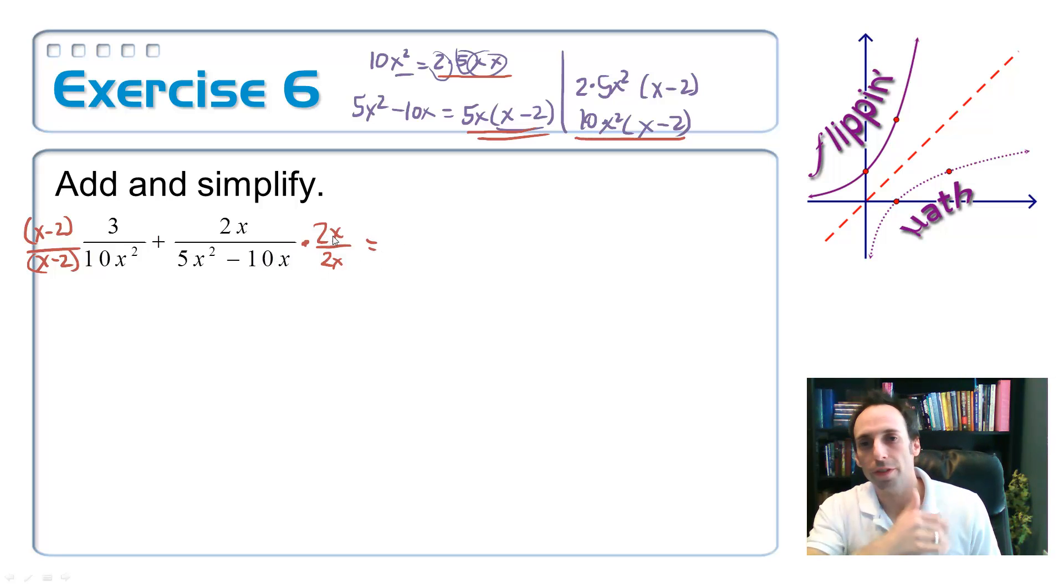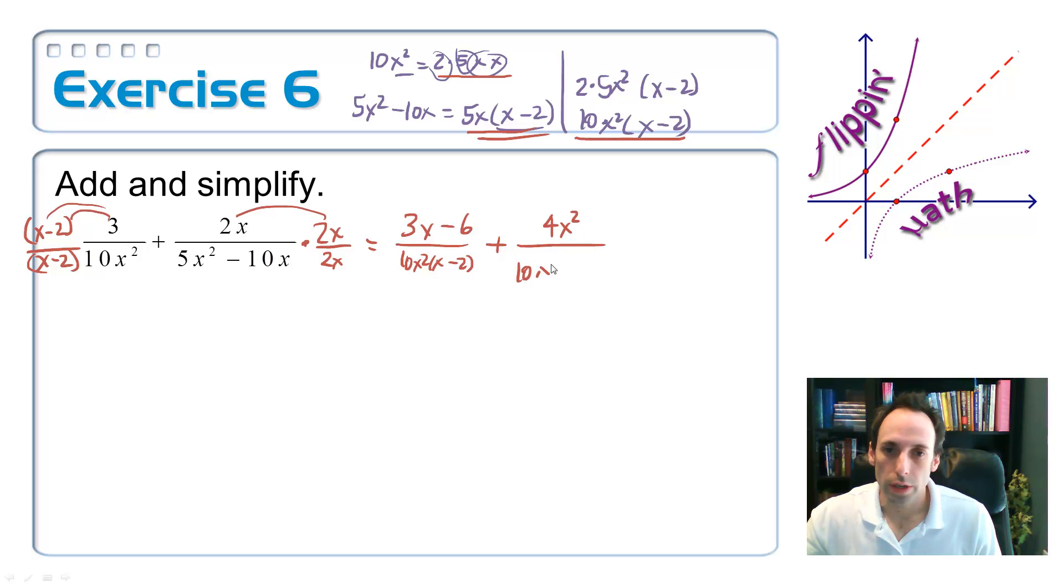Now let's just simplify our fractions. Distribute this 3 across here. And I'd have 3x minus 6 over the common denominator we know is 10x squared times x minus 2, plus, and now multiplying these two together, I have 4x squared over 10x squared times x minus 2. Now, what do I do? Keep the denominators the same and just add up the tops. Put it in standard form. So, I'm going to start with 4x squared plus 3x minus 6, all over 10x squared times x minus 2.